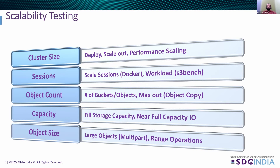An important parameter is the object and bucket counts — the maximum limit supported and various operations when the system is subject to maximum capacity, along with object copy operations and associated limits. We also deal with the capacity of the storage system itself, considering aspects of filling storage to maximum possible capacity by simulating near-full capacity, as system behavior changes when near full. The last area is object size itself: we consider read, write, and delete operations with large objects, multipart objects, large numbers of small objects, mixed object sizes, and object range operations.